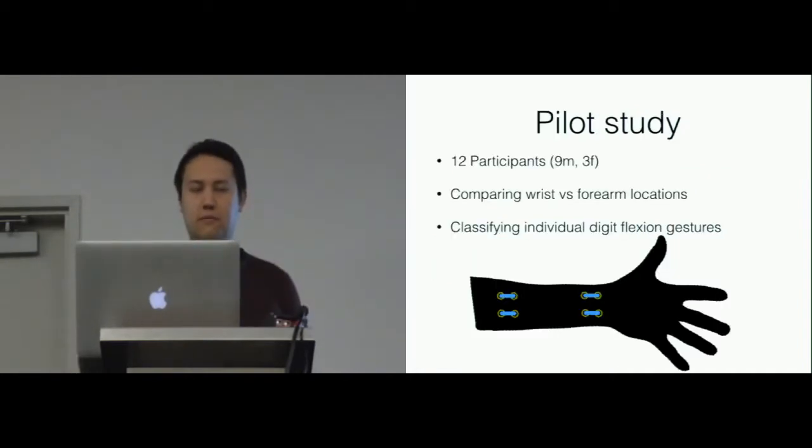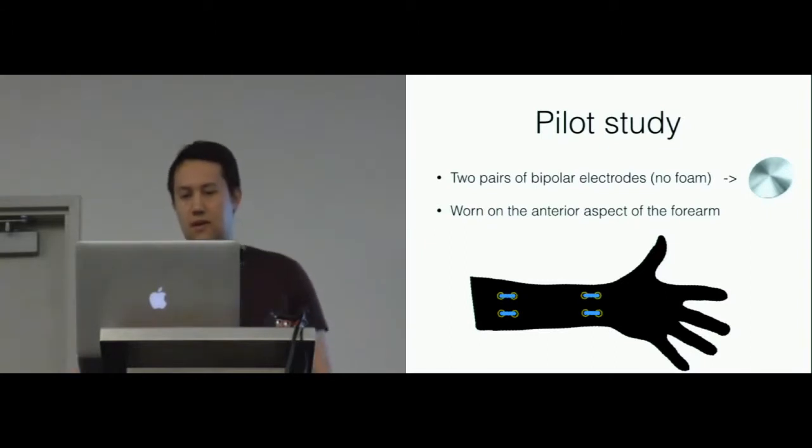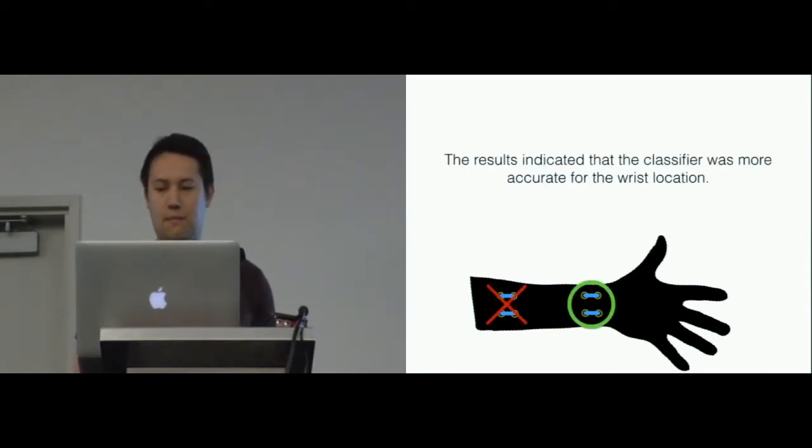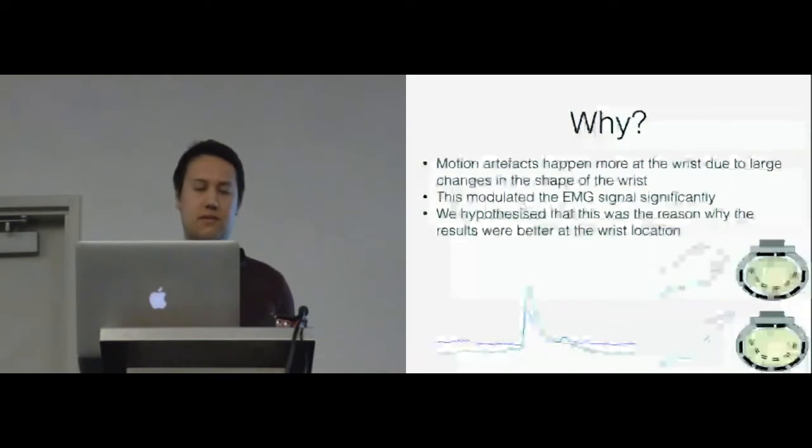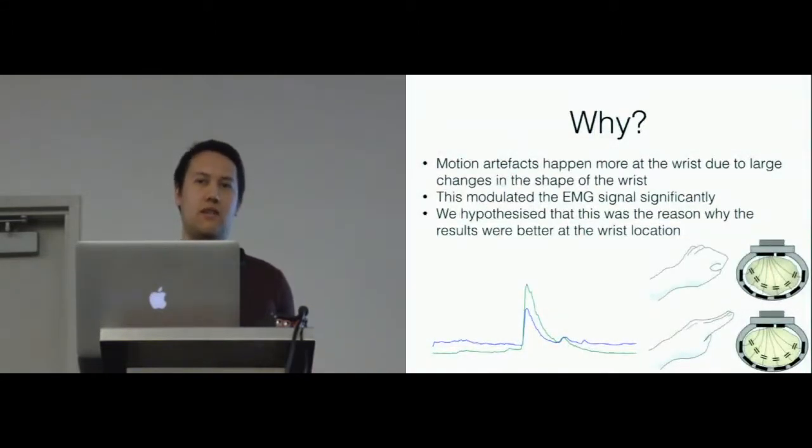We performed a study with four participants to compare the wrist location versus the upper-mid forearm location, classifying individual finger digit flexion movements. For this, we used two pairs of bipolar electrodes, the dry variety with no foam, worn on the anterior aspect of the forearm. Our results showed that actually the wrist location performed better than at the forearm location. This surprised us because we had assumed that the trade-off was that you would lose accuracy.